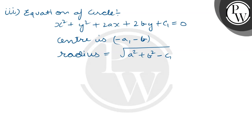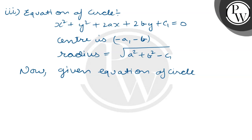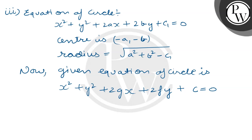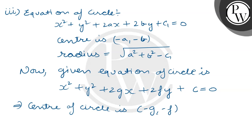For the given circle x² + y² + 2gx + 2fy + c = 0, the center is (−g, −f) and the radius is √(g² + f² − c). Now applying the second key concept, the chord of contact PQ is given by gx + fy + c = 0.